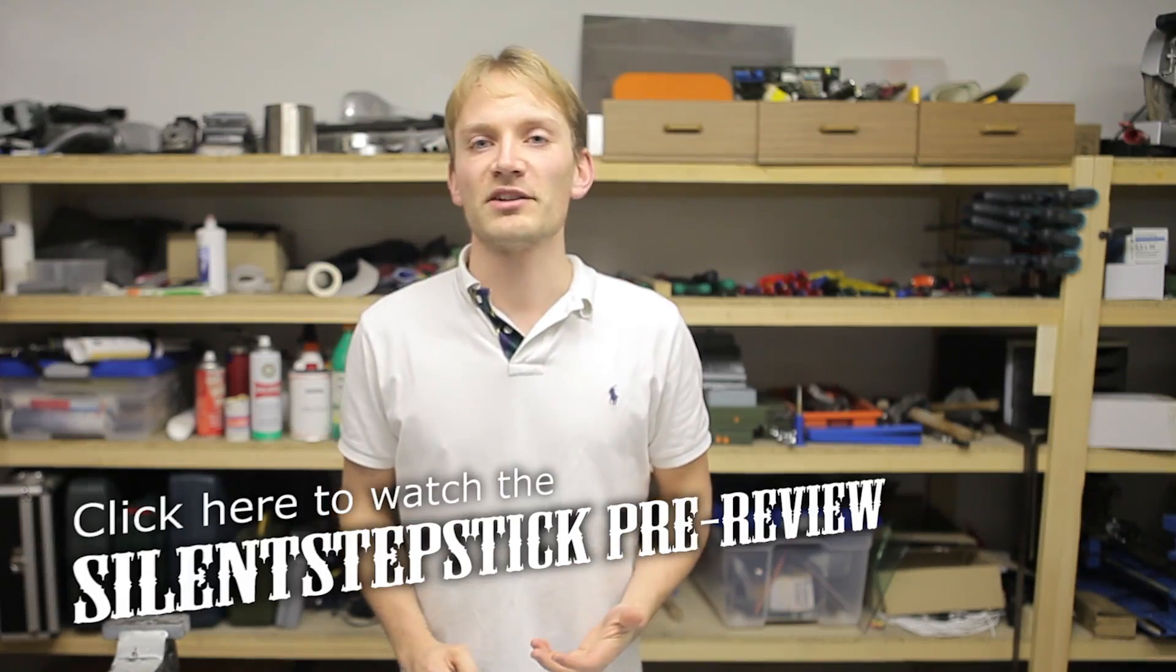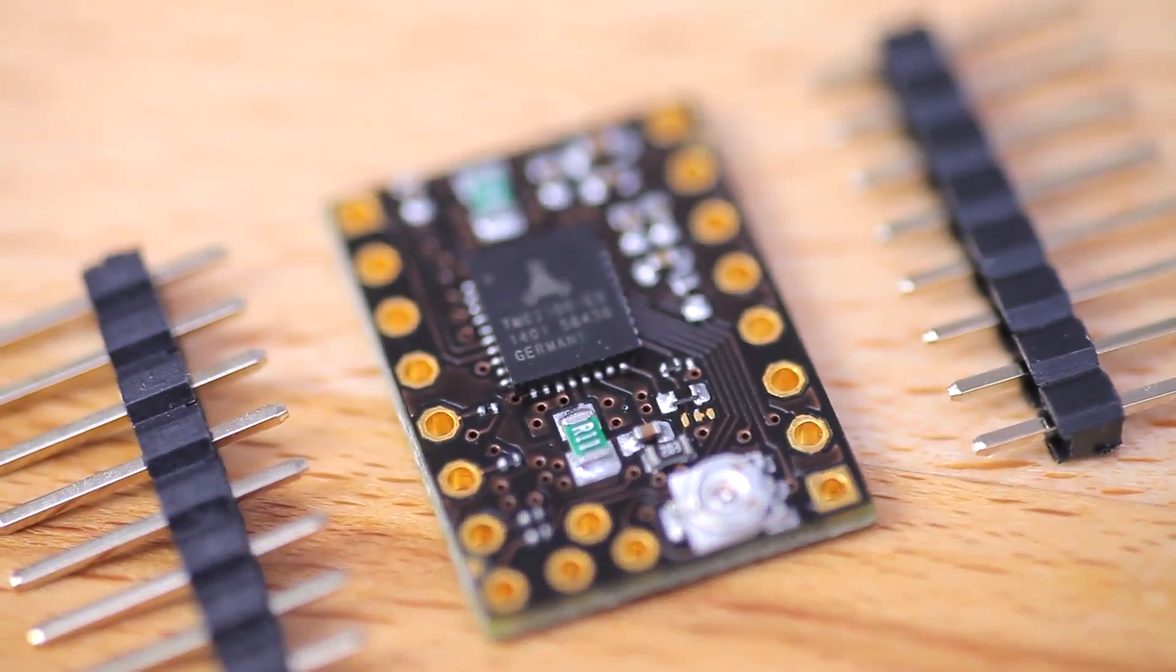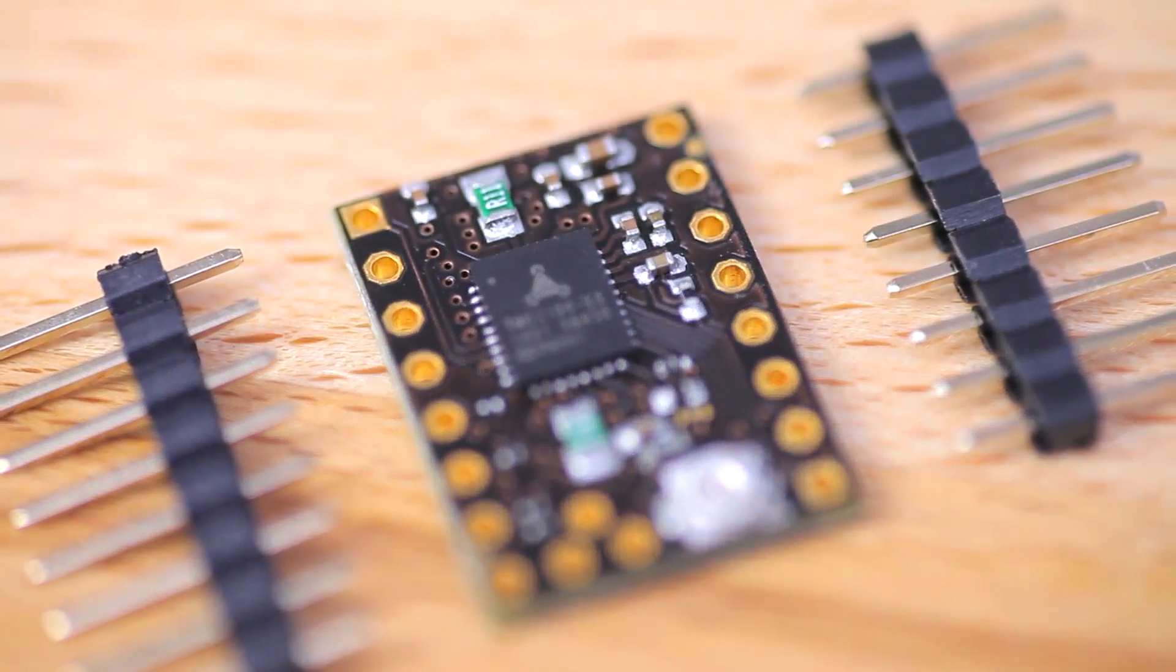So the first obvious difference, gold baby. Instead of just a plain tin plating, the boards, solder spots, and the pin headers are now gold plated, making them a bit easier to solder to and giving a more reliable contact down to the baseboard.